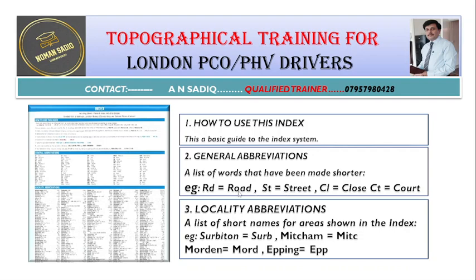For example, road will be represented by RD, street by ST, close by CL, and court by CT. Likewise, Mitchell will be represented by MITC, and Epping by EPP.